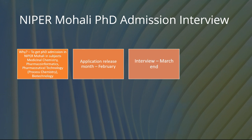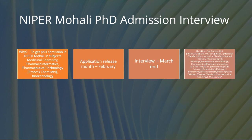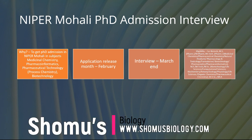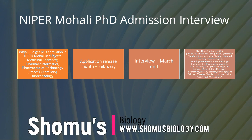The application release date is normally in February, and the interview date is around the end of March. For biotechnology eligibility, you need an MS in Pharma or anything related, such as an MSc equivalent. The list of eligible courses includes M.Tech, MSc in botany, zoology, computer science, life sciences, organic chemistry — basically any field from life science, and even chemistry backgrounds are acceptable.